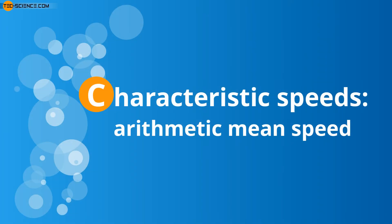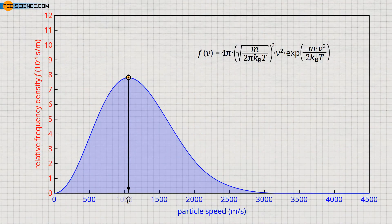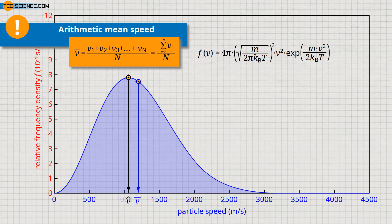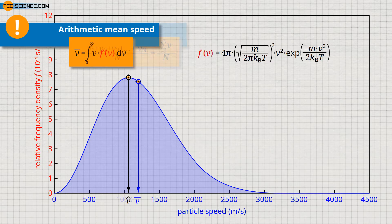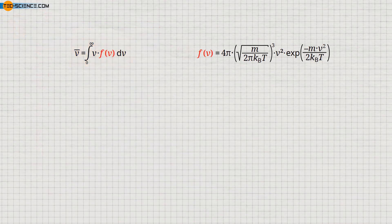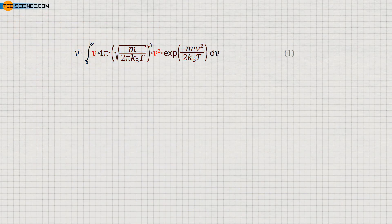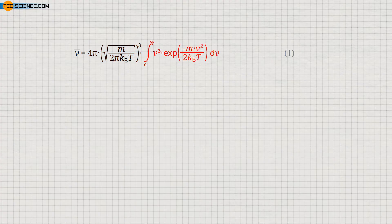Characteristic speeds — arithmetic mean speed. Besides the most probable speed, the so-called arithmetic mean speed is also used to characterize a speed distribution. This is also referred to as average speed or just mean speed. The average speed is obtained by summing up the speeds of the particles and then dividing the sum by the number of particles. Mathematically, this mean speed can be determined by integrating the distribution function within the limits from zero to infinity, whereby the distribution function must be weighted by the speed. If we now use the distribution function, we can first multiply the speeds marked in red. After that, the term marked in red can be written before the integral, since it contains only constant quantities.